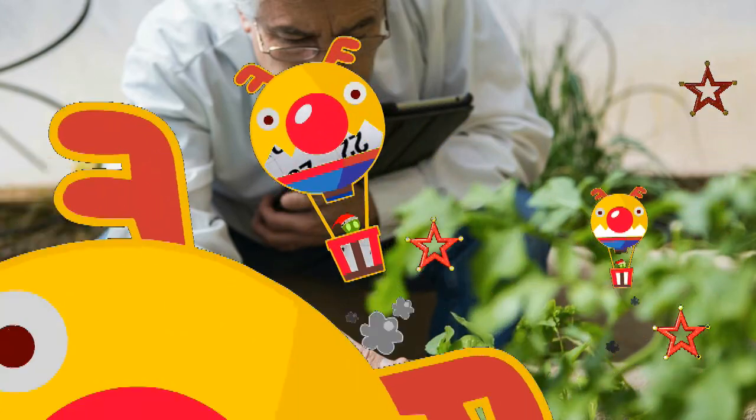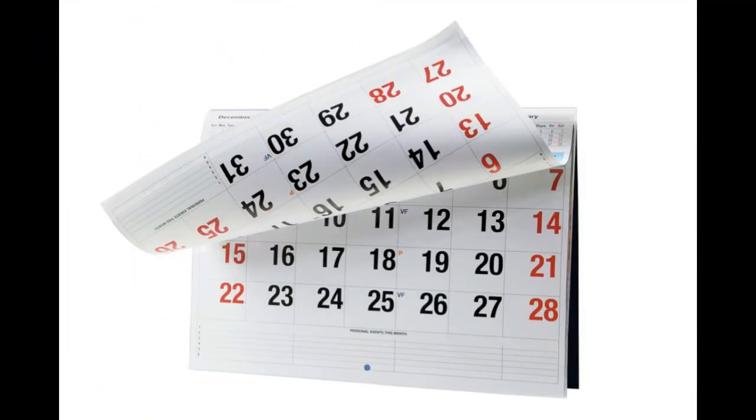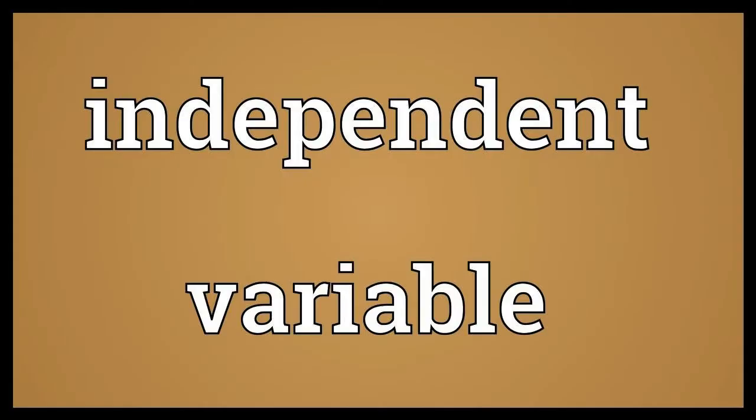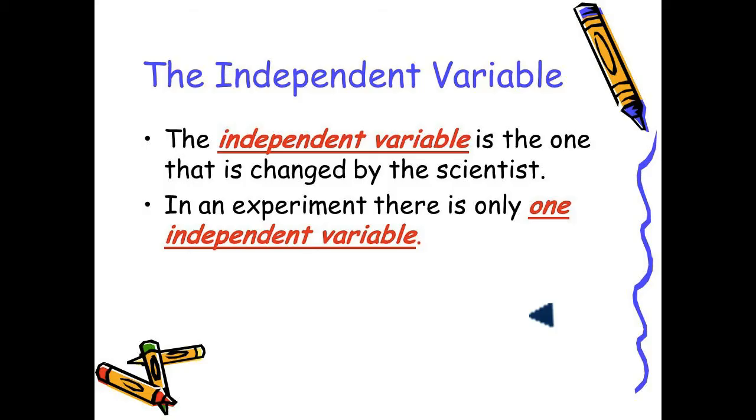And you do this for, we'll say, 30 days. So we have two factors. One is the independent variable. The independent variable is the thing that the scientist changes. And what are we changing in this experiment? We're changing the amount of water. So the independent variable is the amount of water.